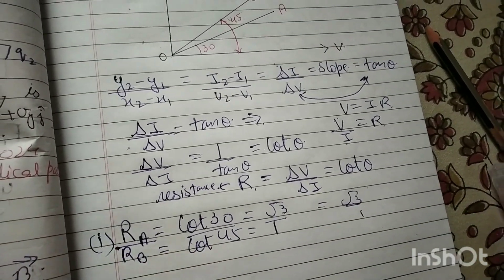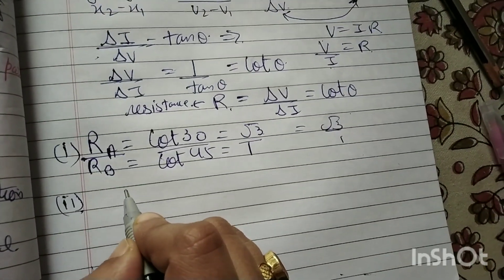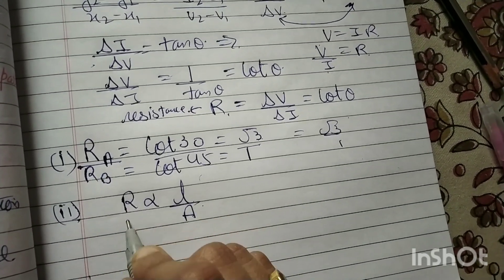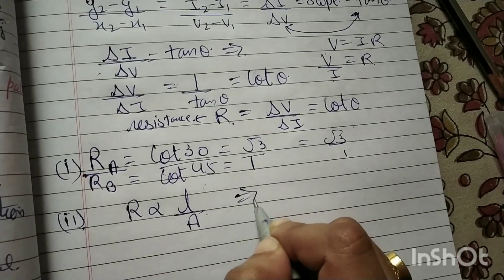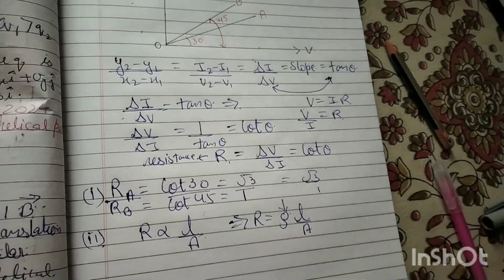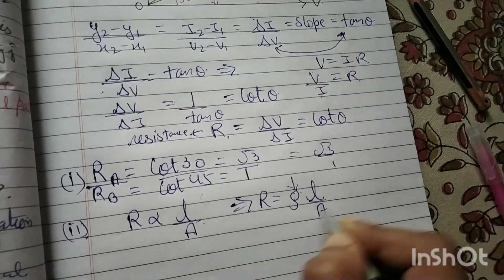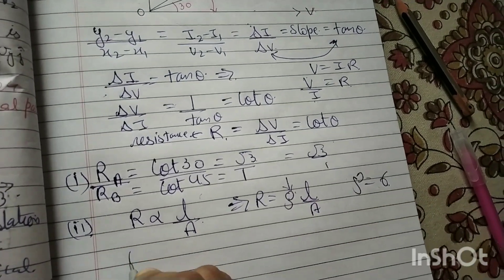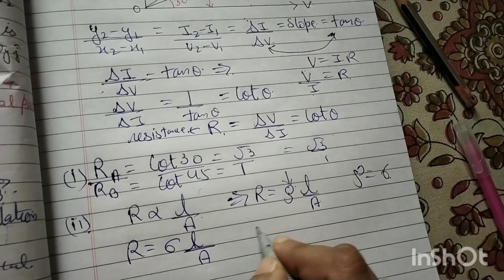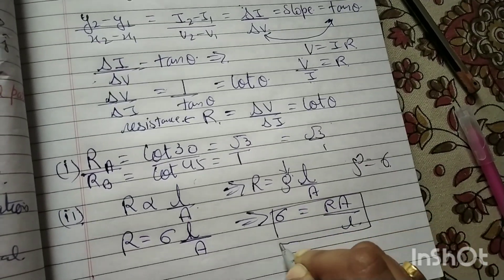Now for the second part — resistivity. Resistivity: R is directly proportional to L upon A. To remove the proportionality sign, we use resistivity rho. Here they denote resistivity as sigma, so rho equals sigma. Therefore R equals sigma L over A, which implies sigma equals R times A divided by L. This is our resistivity formula.